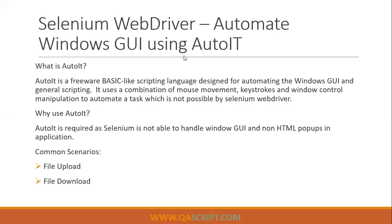We are going to look at how we can automate Windows GUI dialog boxes using a tool called Auto IT. Basically, Selenium is made for web applications. Within web applications, you will face scenarios where a Windows pop-up comes up — a Windows dialog box, not an HTML dialog box. When these non-HTML pop-ups come up, Selenium cannot handle them because there are no elements you can identify on that window. So in these cases, you need external tools to automate Windows dialog boxes. Auto IT is such a tool — it's a freeware scripting language used for automating Windows GUI and general scripting.